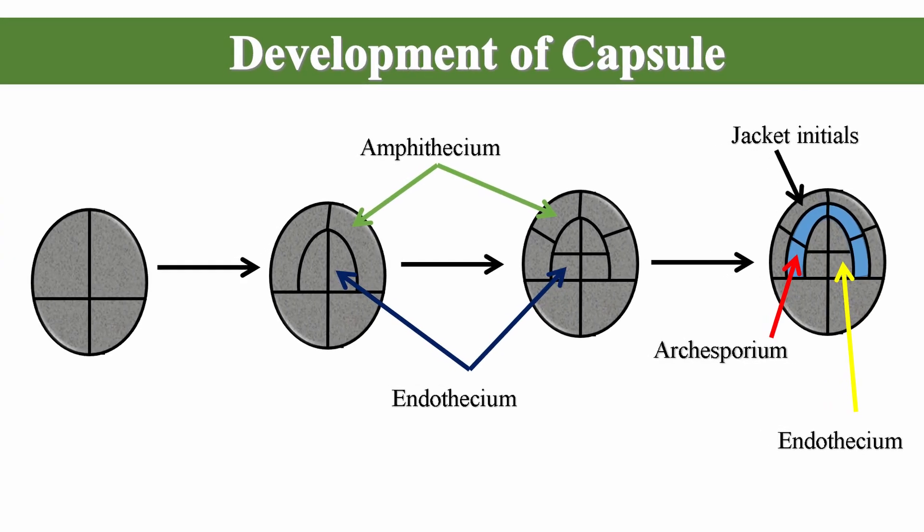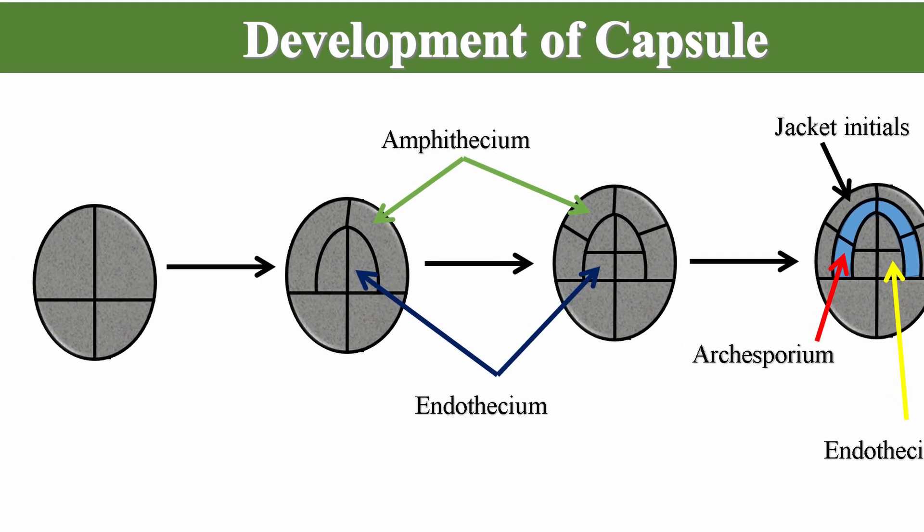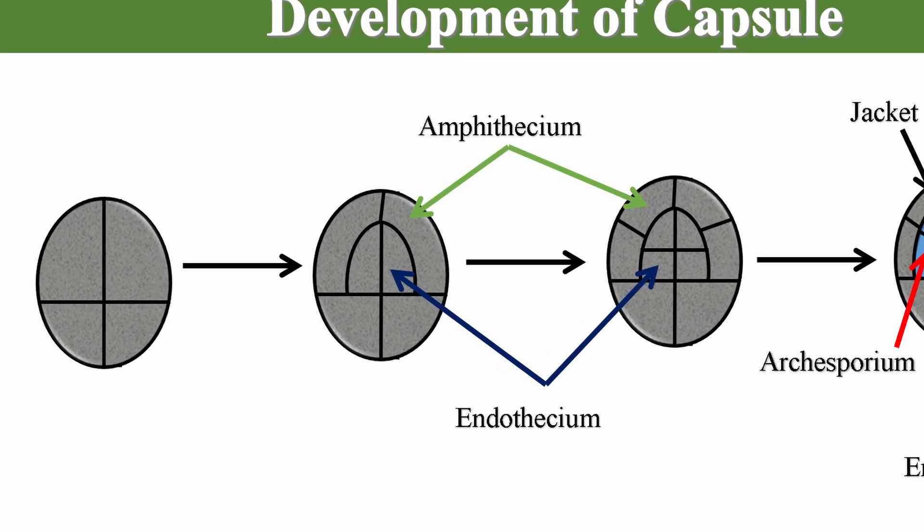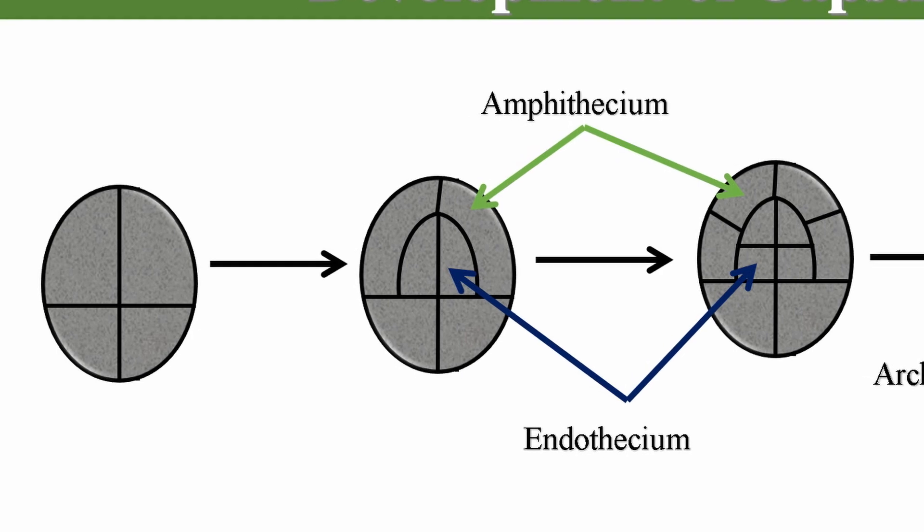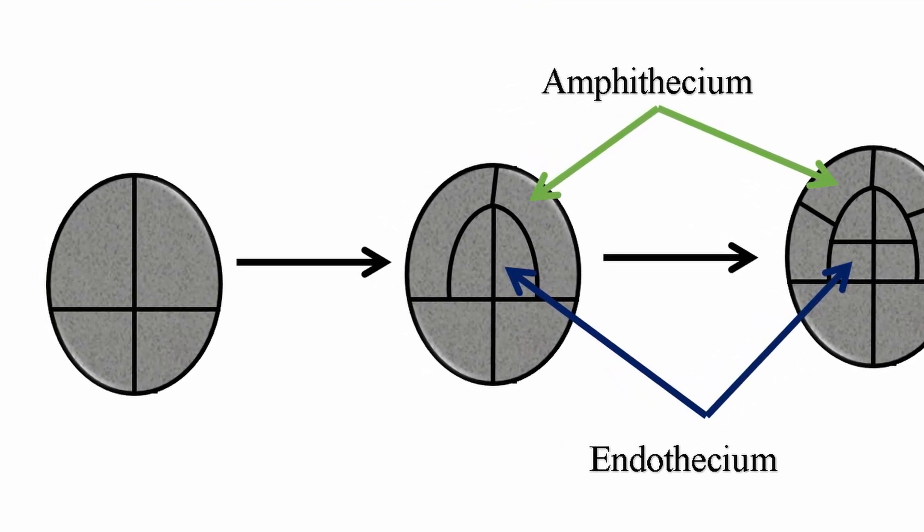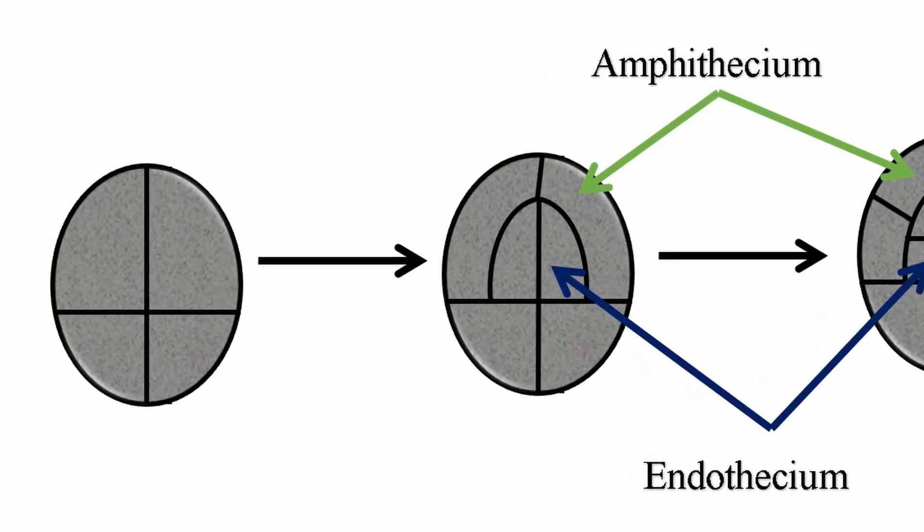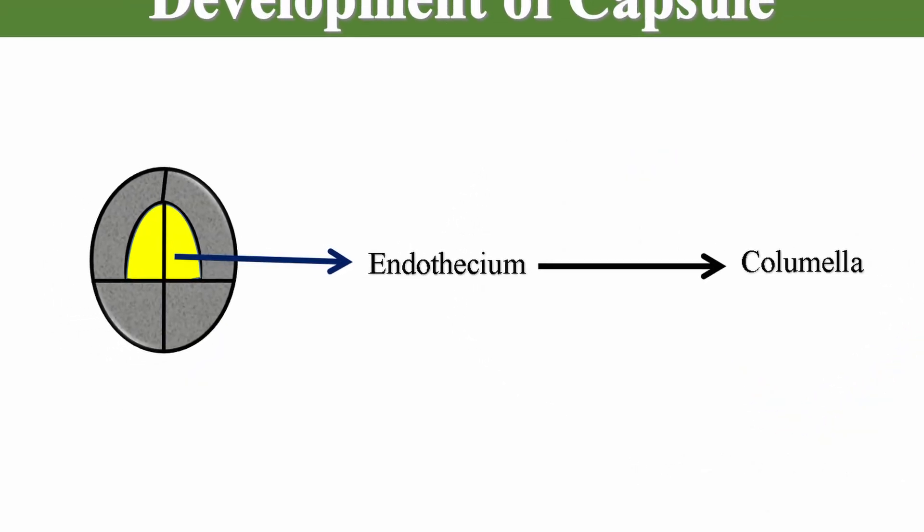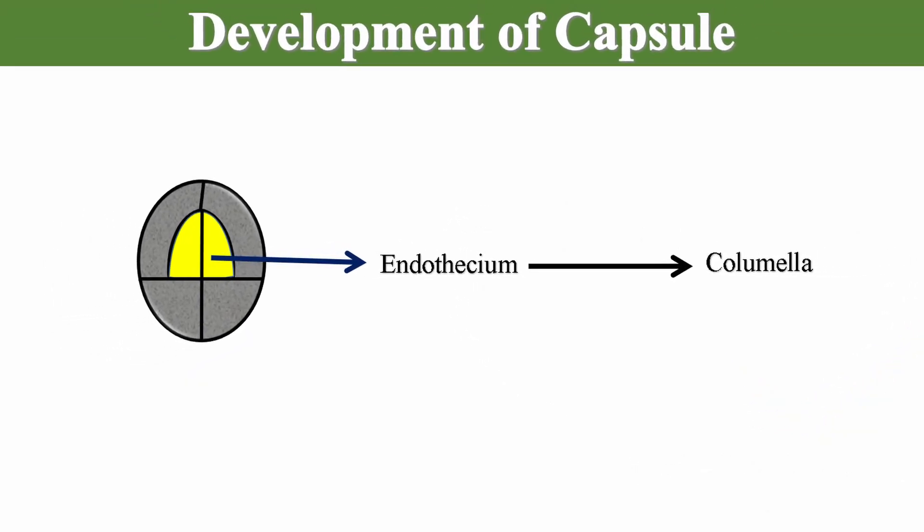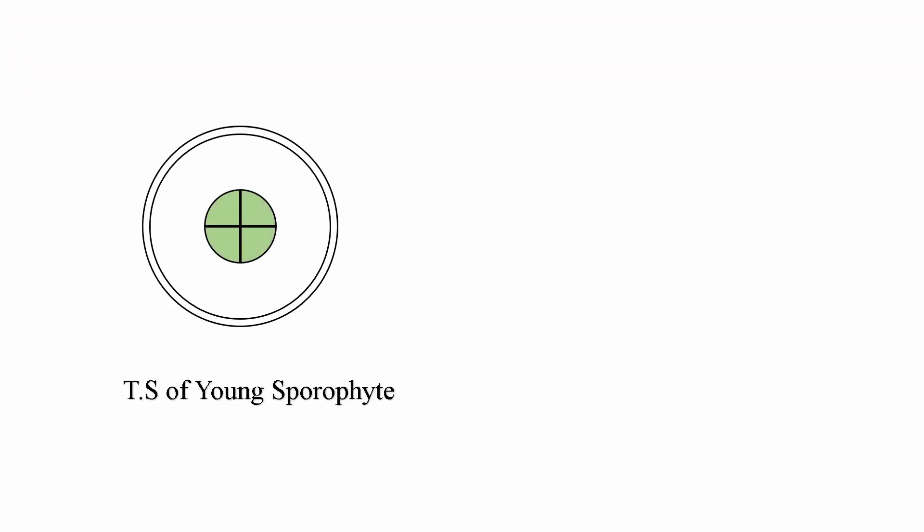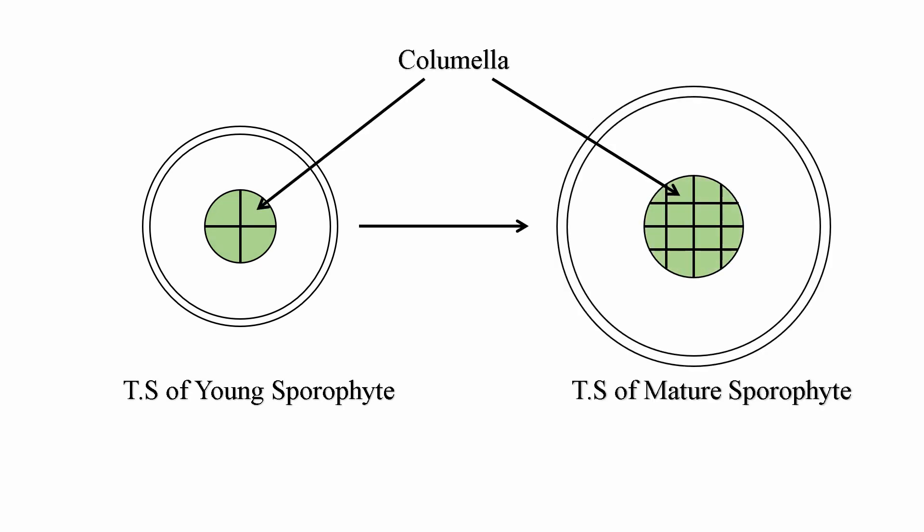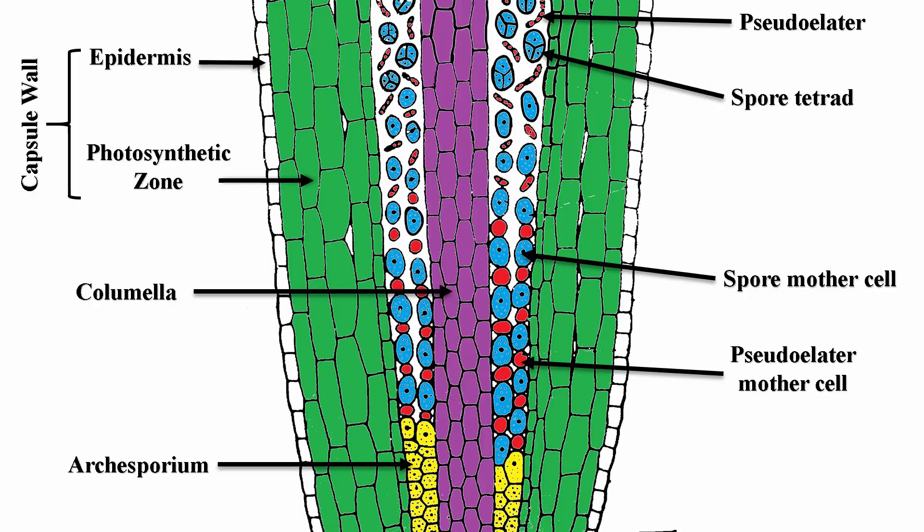Now, the development of capsule. The cells which are destined to form the capsule of the sporophyte divide by periclinal walls which delimit an outer layer of four cells, the amphithecium, enclosing an inner mass of four cells, the endothecium. From the entire endothecium originates the sterile tissue, columella, which in young capsule is made up of four vertical rows of cells, while in the older capsule it consists of 16 vertical rows.